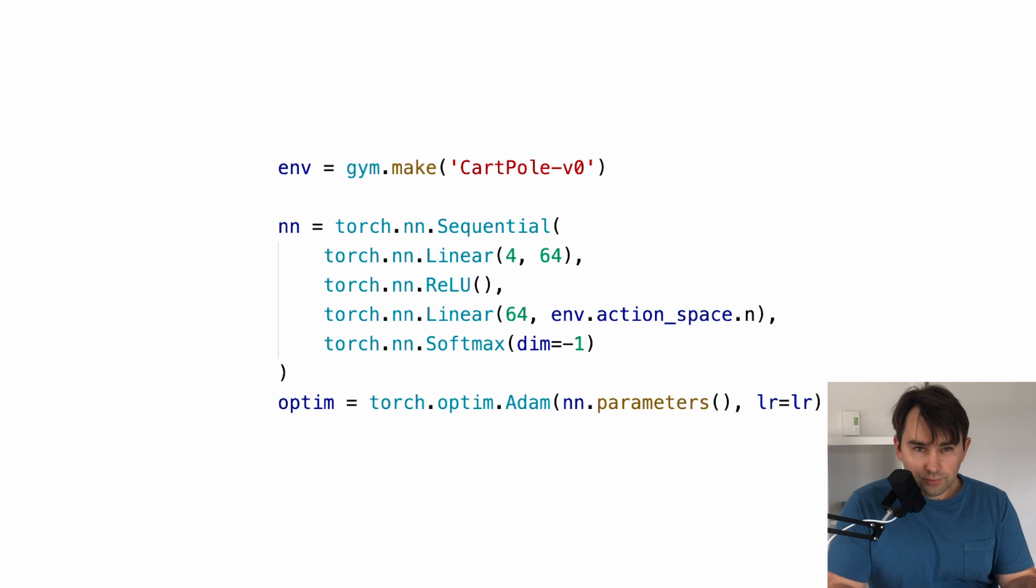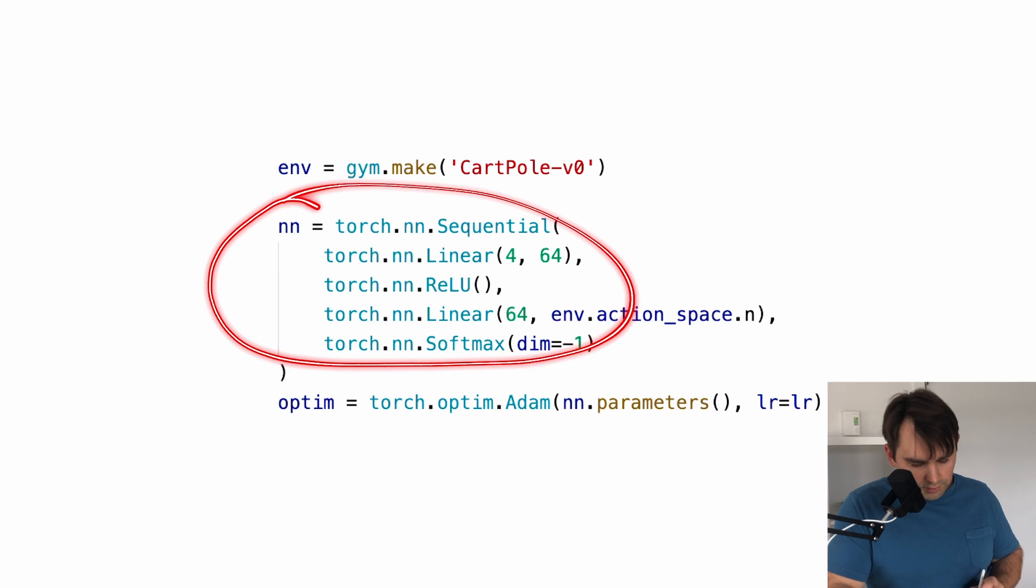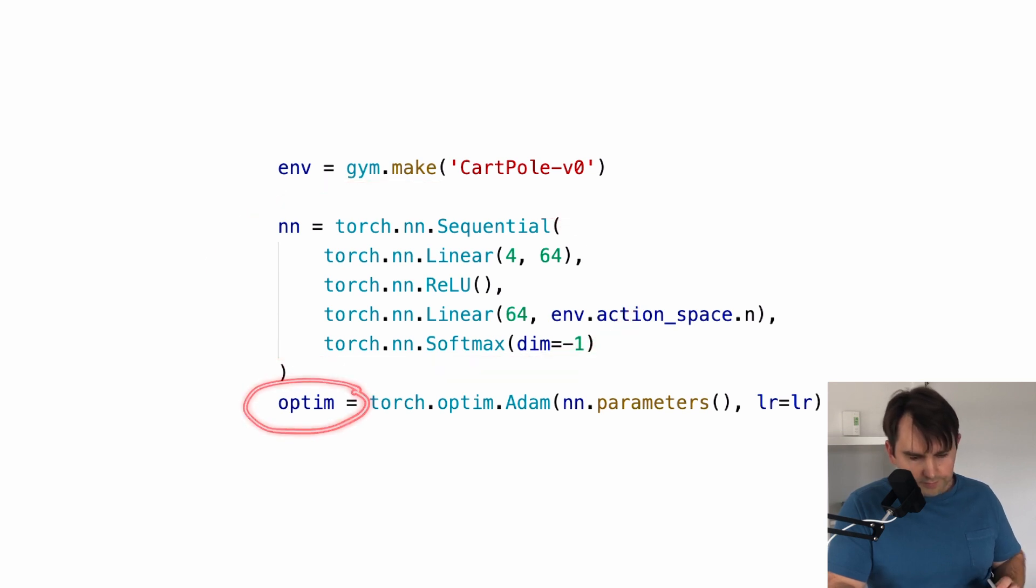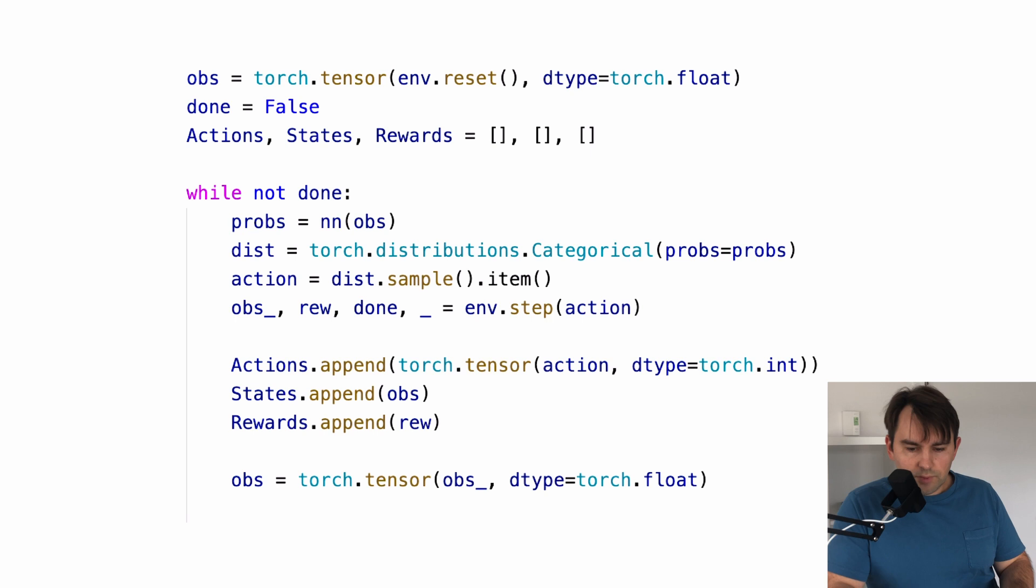Let's now go through the implementation of REINFORCE step by step. First, we declare our environment. Then our neural network, and then our optimizer. Next, we gather one episode of experience. As you can see, what we're doing here is simply passing our observation to a neural network. Getting our probability distribution, and sampling from it to get our action.